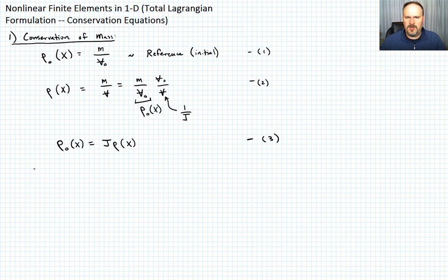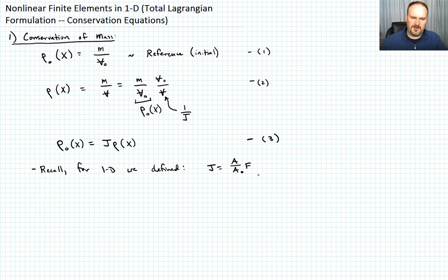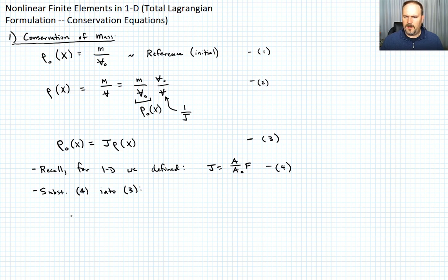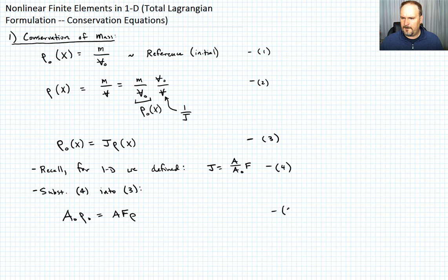For 1D, we defined the Jacobian in the previous lecture in volume form as A over A₀ times F, where F is the deformation gradient — call that equation 4. Substituting equation 4 into equation 3, we get that A₀ · ρ₀ = A · F · ρ. This is our conservation of mass equation.